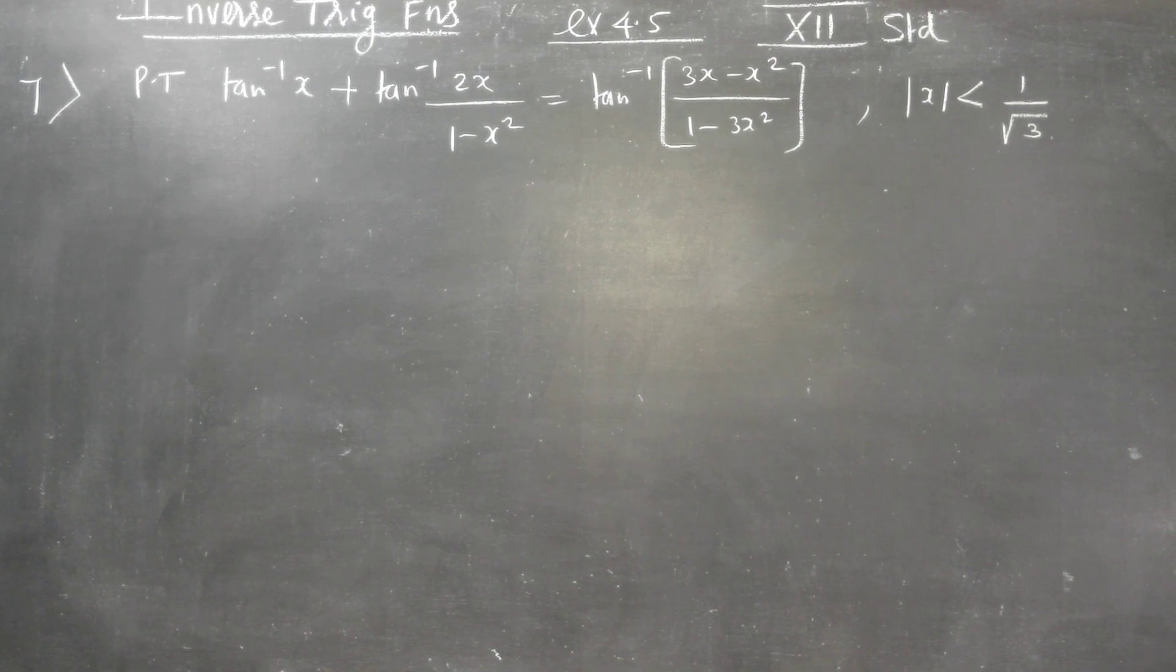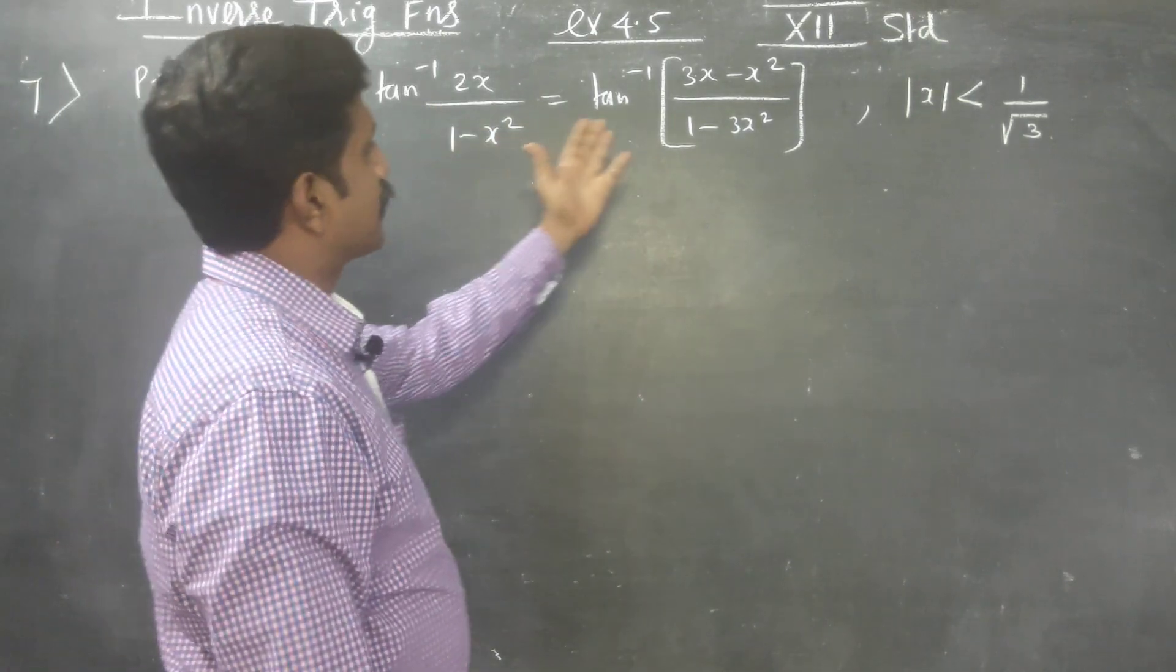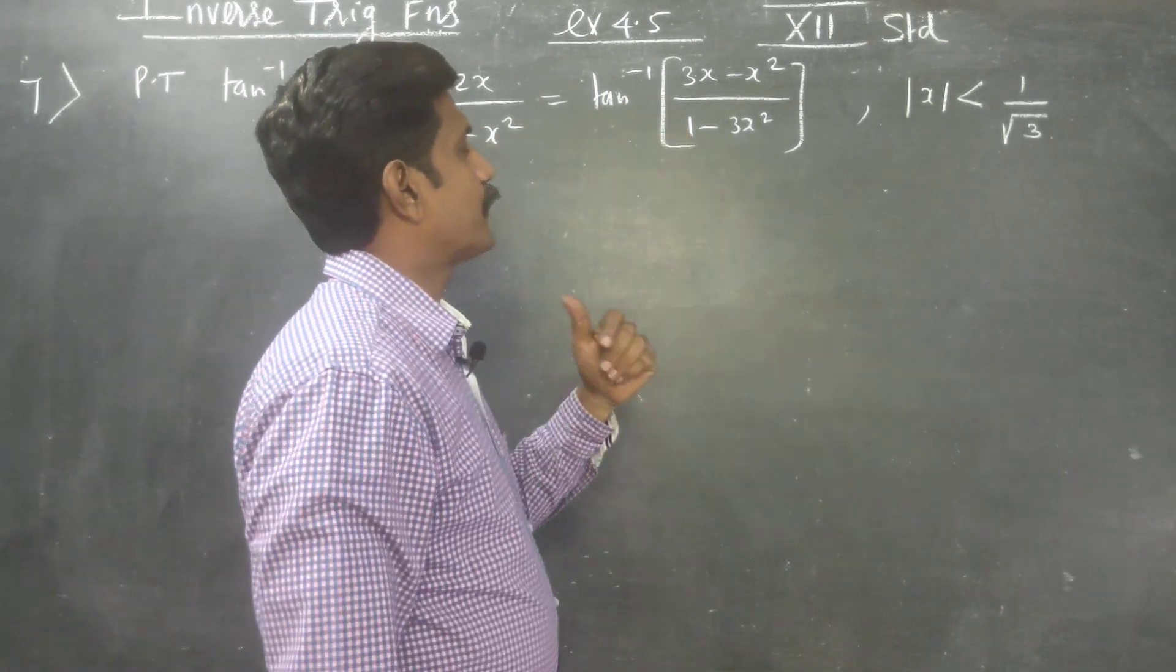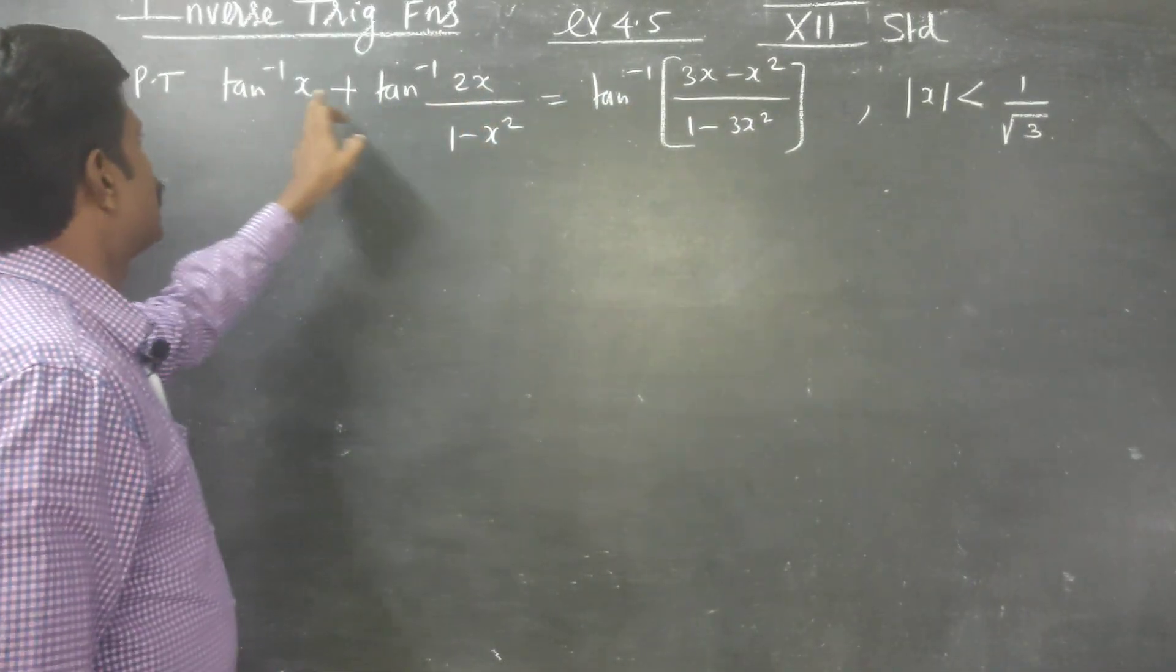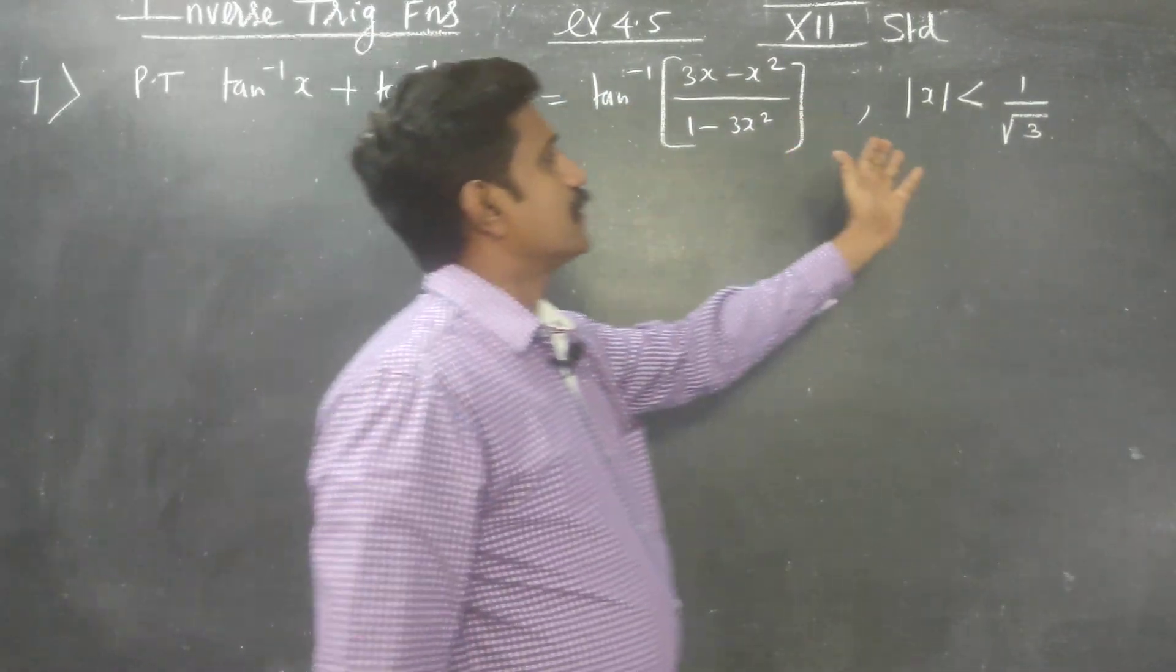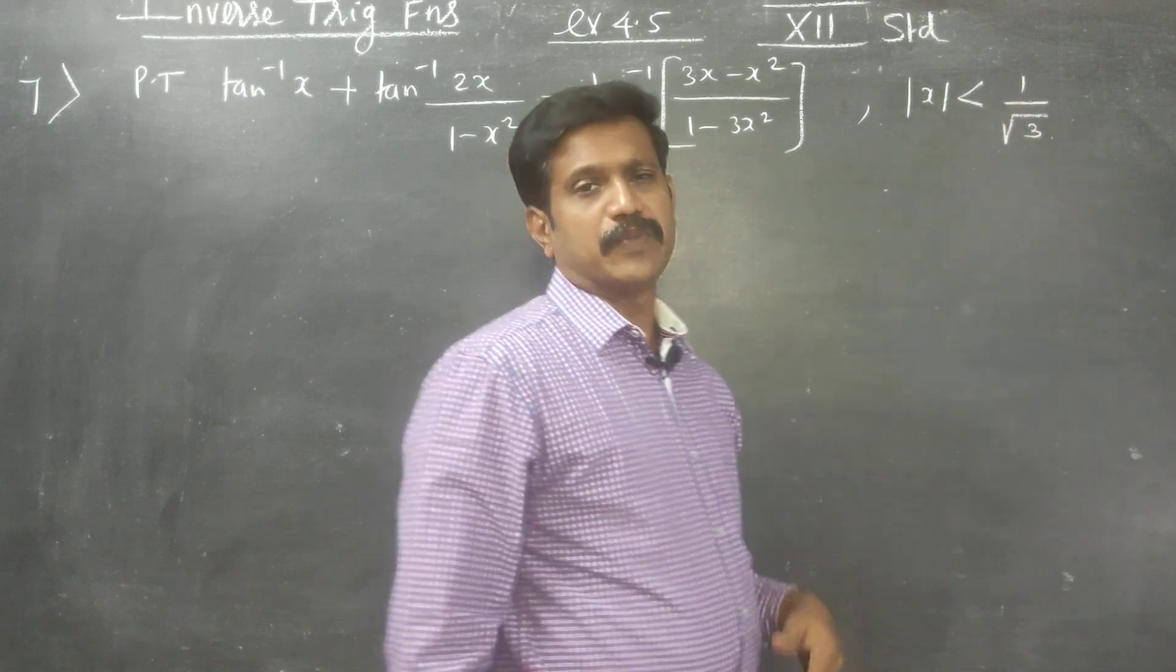Dear Toll standard students, exercise number 4.5, prove that this equals tan inverse of modulus of x is less than 1 by root 3, means the domain. The values of x must not exceed plus or minus 1 by root 3.